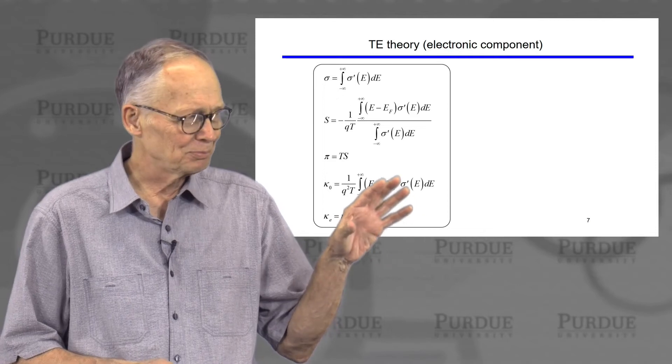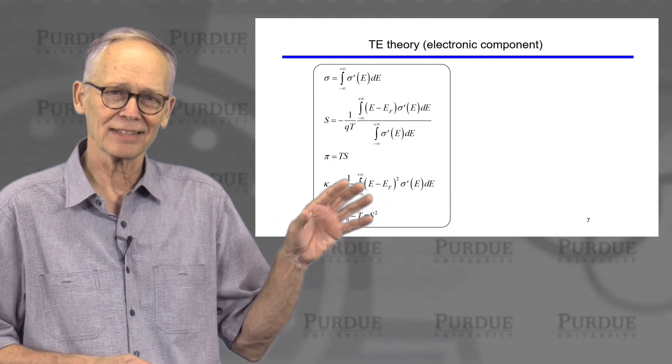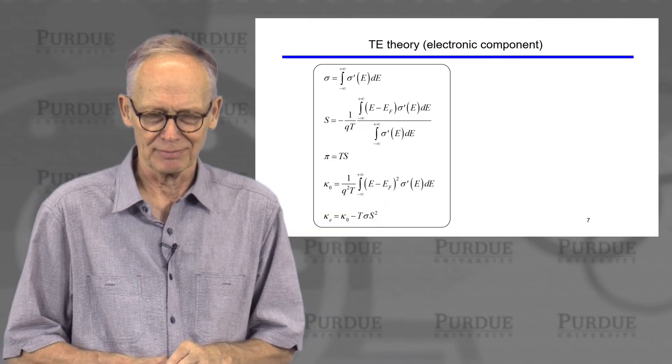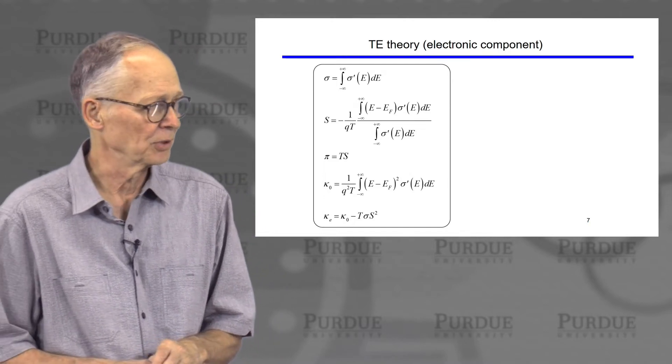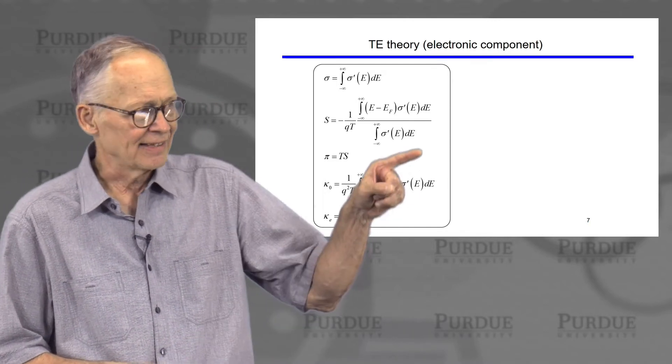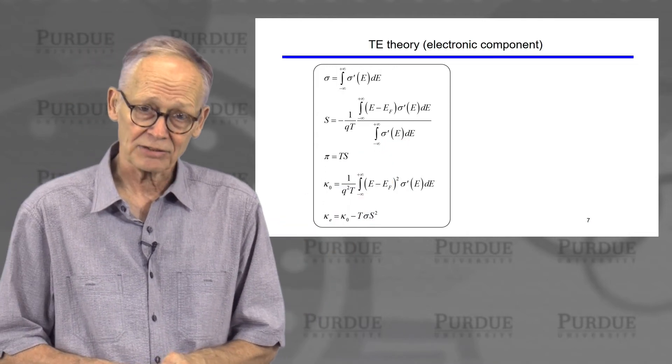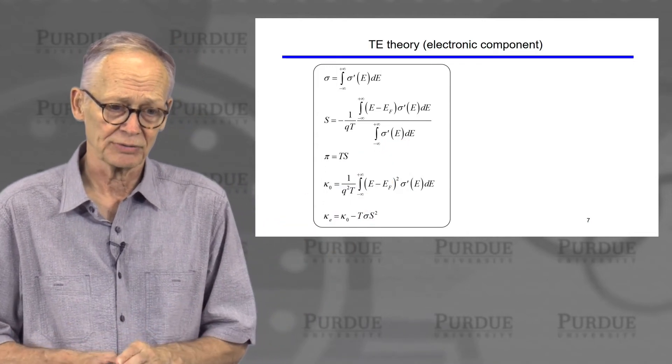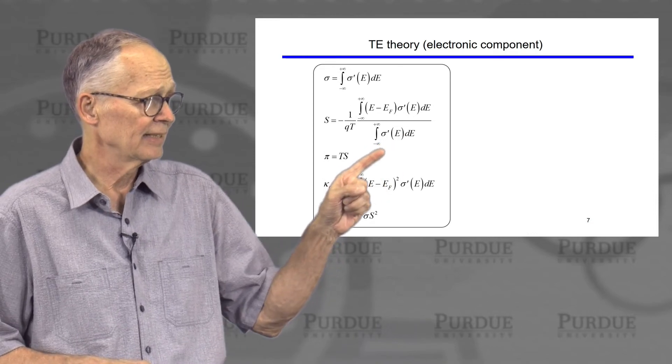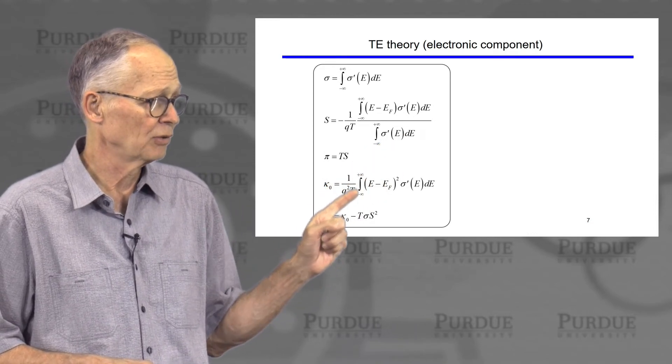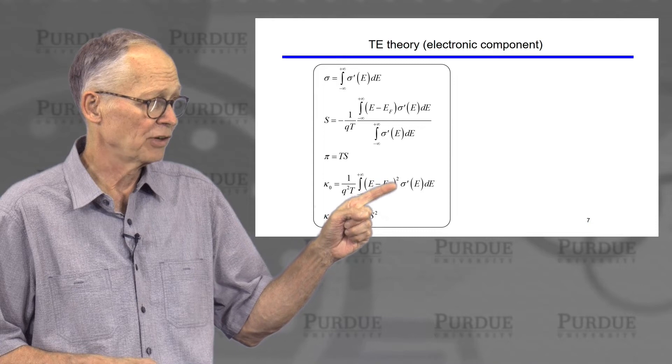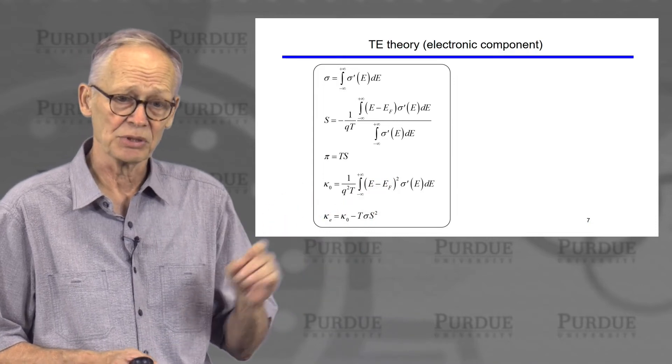Now, one of the problems with this field is that the theory gets a little involved. And my goal is to try to help make it a little more understandable in this lecture. These are the mathematical equations for the four electrical transport coefficients. The conductivity, the Seebeck coefficient, the Peltier coefficient, the electronic thermal conductivity in two different forms.